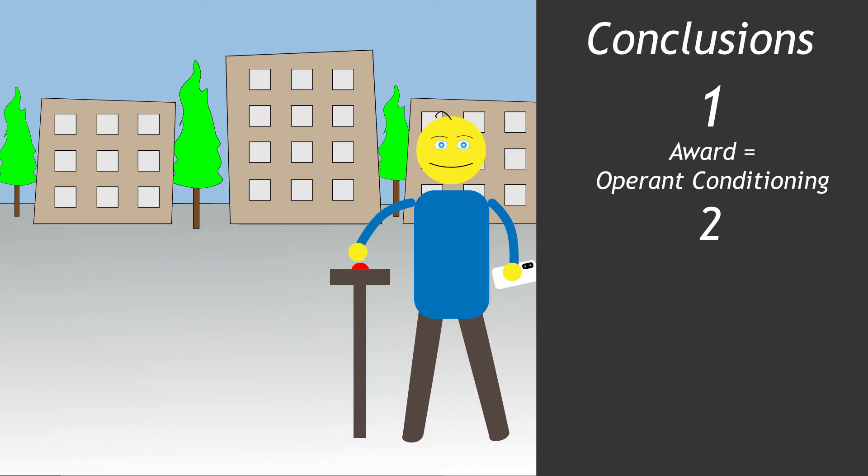If you award the creature each and every time after making a specific choice, it will get bored and know the lesson, and then it will stop.